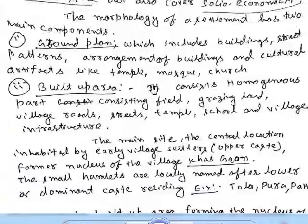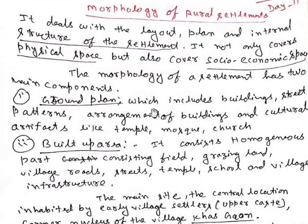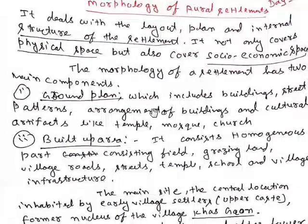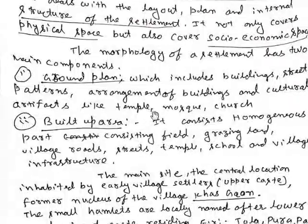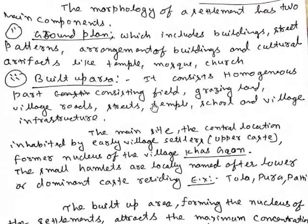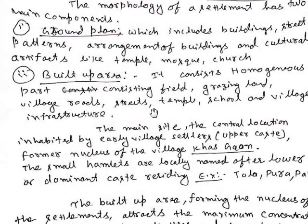Morphological settlements deal with the layout, plan, or internal structure of the settlement. It not only covers the physical sphere but also covers the socio-economic space. The morphology of settlements has two main components: the ground plane and the build-up area.